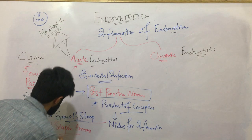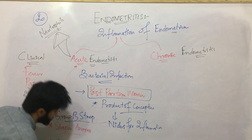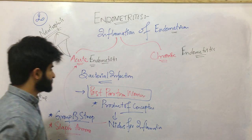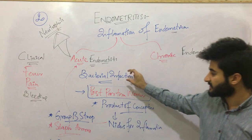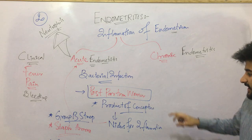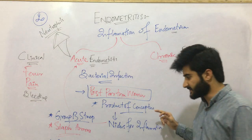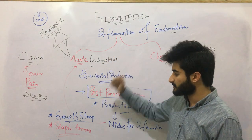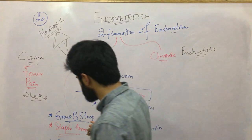Chlamydia can also present as acute endometritis, but mostly chlamydia causes chronic endometritis. To summarize: acute endometritis is caused by bacterial infection, mostly occurring in postpartum women. If the product of conceptus is left behind, it serves as a nidus for inflammation, leading to acute endometritis. The most common causative agents are Group B Strep, Staphylococcus aureus, and Chlamydia.